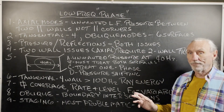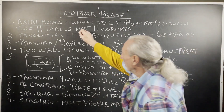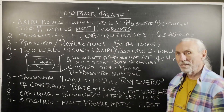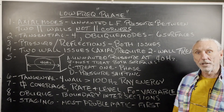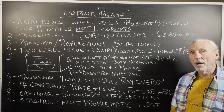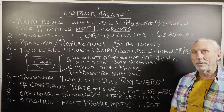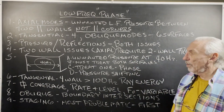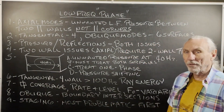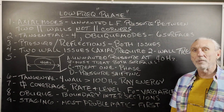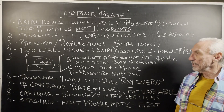Axial modes — we've all heard those. That's unwanted low frequency pressure between two walls, not two corners. This is a good example of how the industry takes the definition and uses parts of it to market its corner units. The problem is not the corner; the problem is the whole wall. It's unwanted energy between two parallel walls. If you just had one wall, you wouldn't have unwanted energy. It takes two to confine it and produce an axial mode.